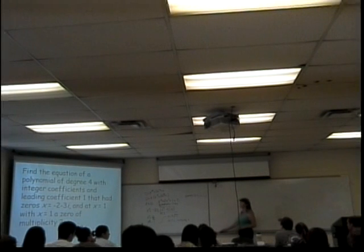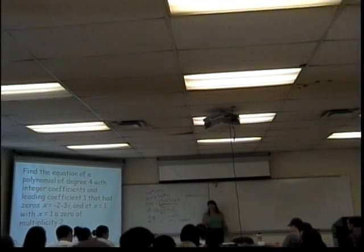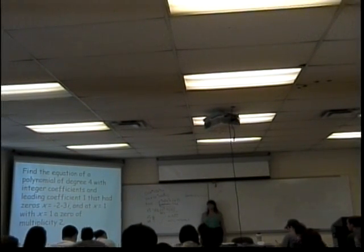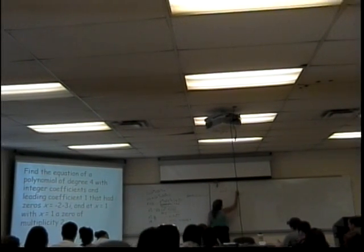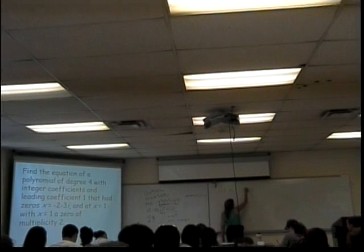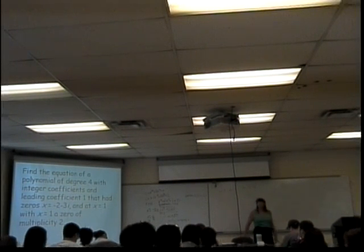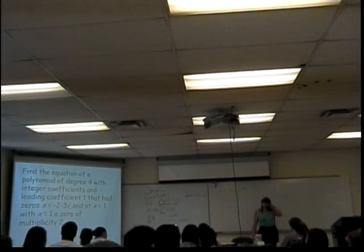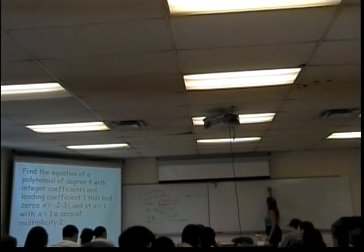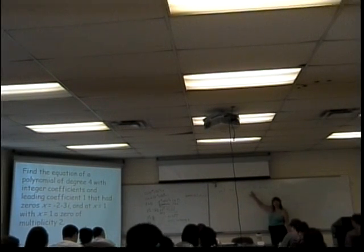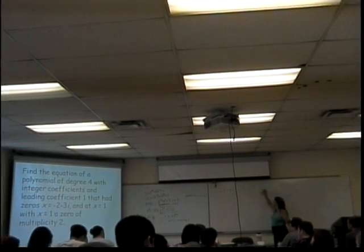Start with writing out your four zeros. x equals 1, x equals 1, x equals negative 2 minus 3i — that's only 3. Remember what I said about complex zeros: if you've got one and your polynomial has real coefficients — in this case integer coefficients — then you've got another one. So the fourth zero is x equals negative 2 plus 3i.